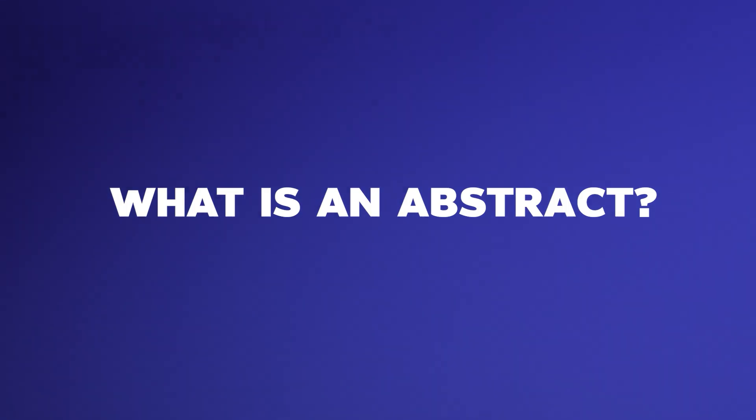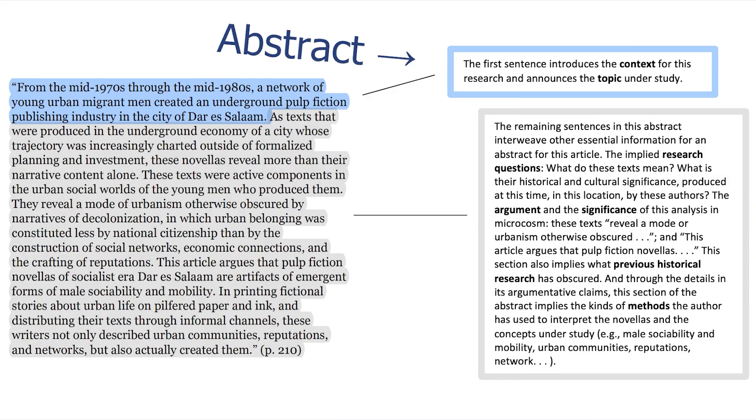I assume that most of you know what a graphical abstract is. In case you don't, here's a quick overview. You know what an abstract is — a quick summary of your research that you put at the very first page of your paper. A graphical abstract is basically like a trailer for your abstract, like a movie trailer, so that people get interested in your paper, know what to expect, and eventually read the entire paper. It conveys the main core message of your paper visually, so that people look at that graphic and get an idea of what the paper is about and get motivated to read it.